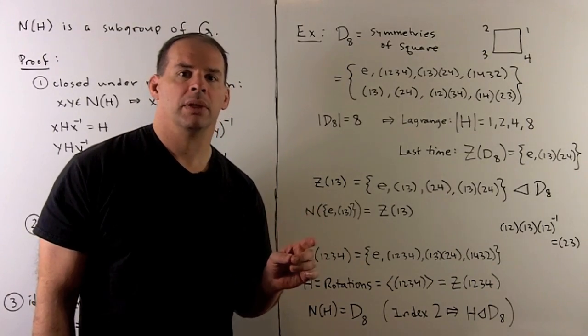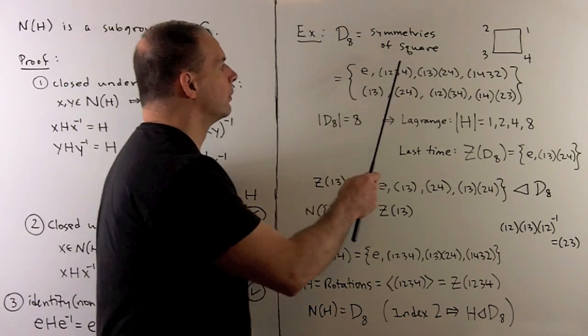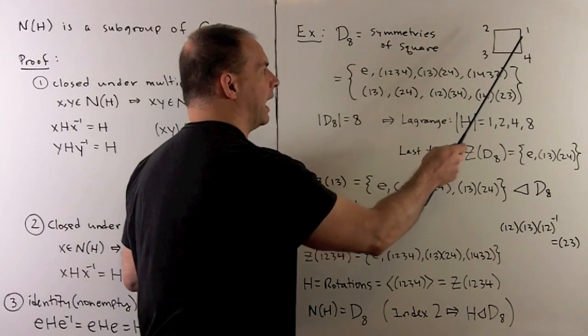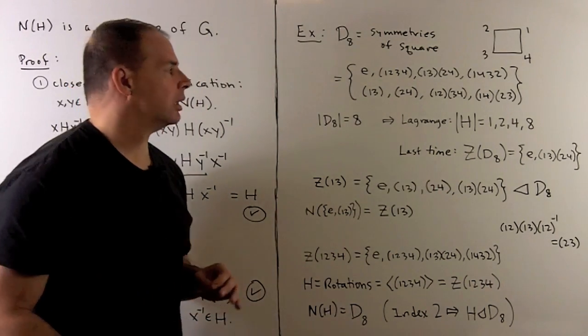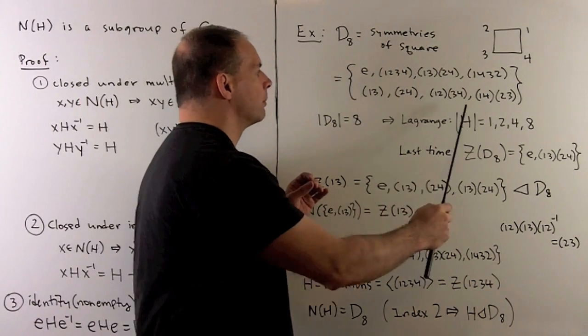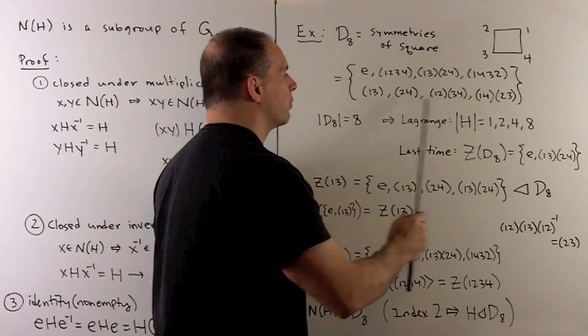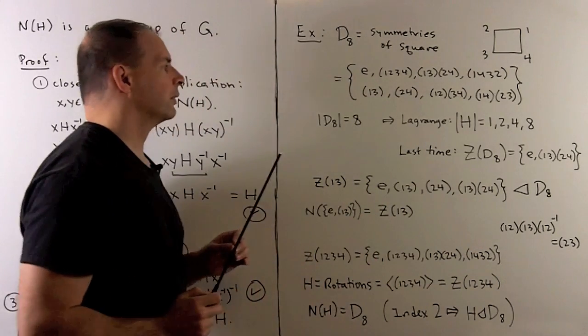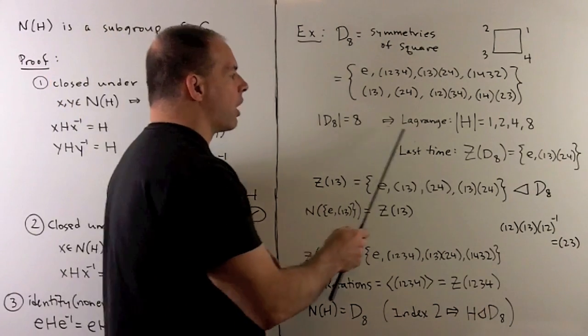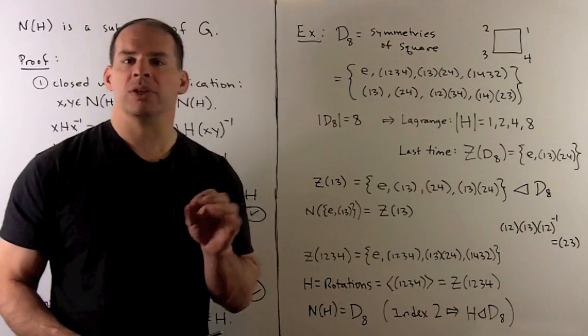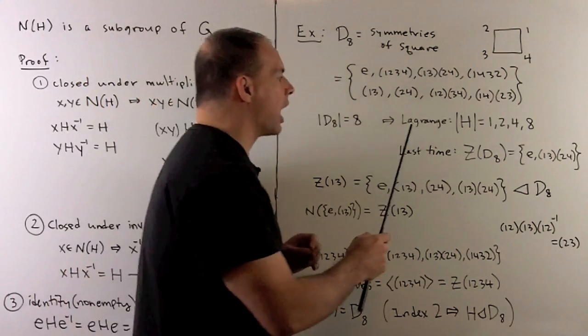For a concrete example, let's consider D8, the symmetry group of the square. We have our square labeled one, two, three, four going counterclockwise. If we list out the elements, the top row is the rotations, the bottom row is the reflections. D8 has eight elements. By Lagrange's theorem, if we have a subgroup, its order must divide eight. So we have one, two, four, or eight for our options.